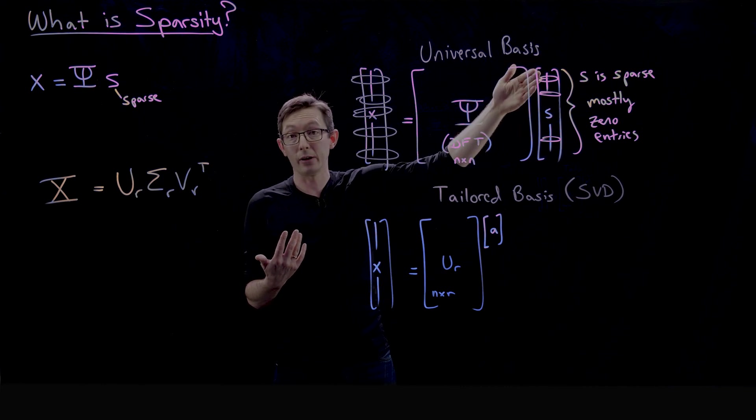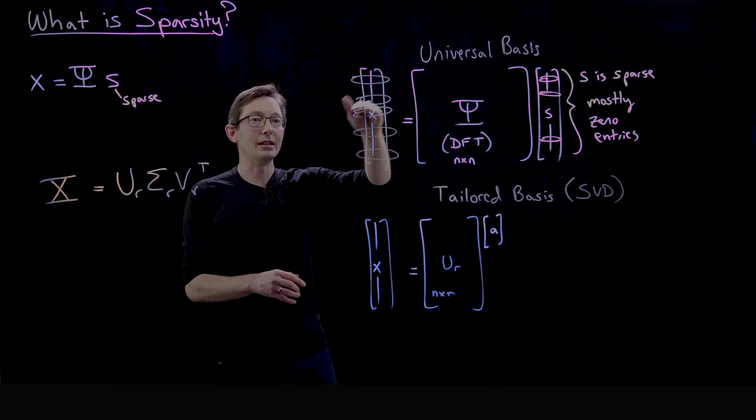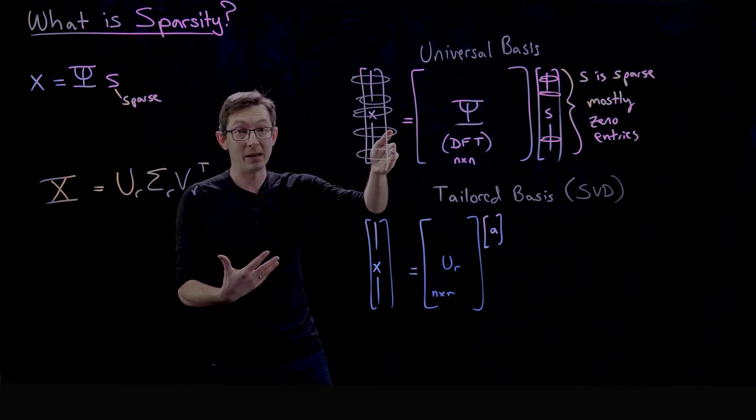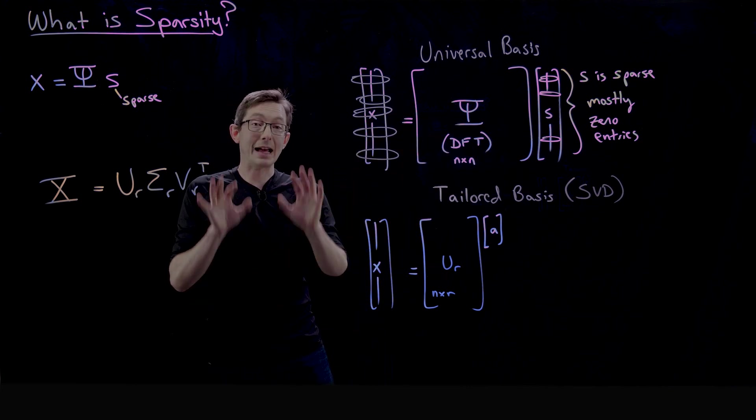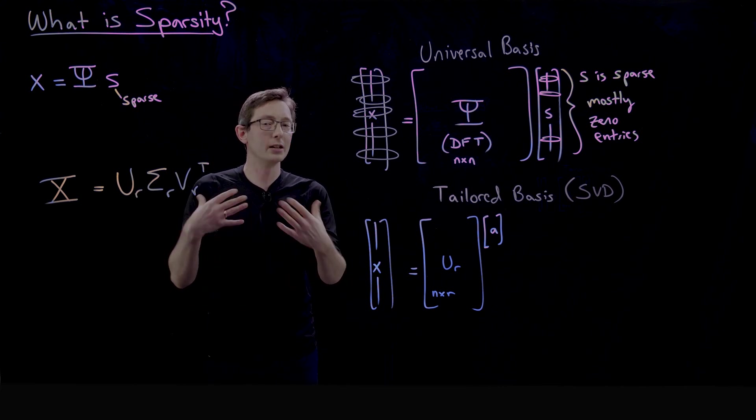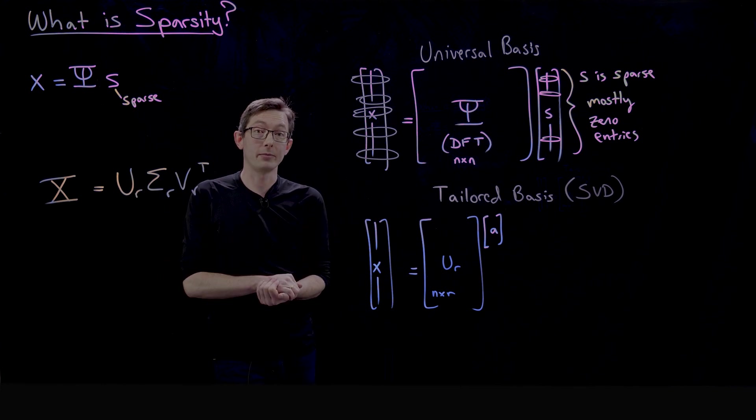But what's even more impressive is if you didn't even measure those million pixels to begin with. So if I only measure a subset of those pixels, can I infer what entries are non-zero? So that's all coming up—that's called compressed sensing. It's super interesting, really rich mathematical theory, and that's what I'm going to show you next. All right, thank you.